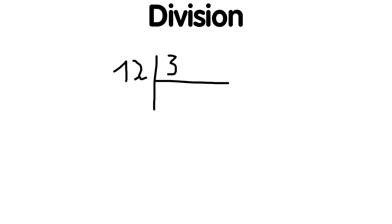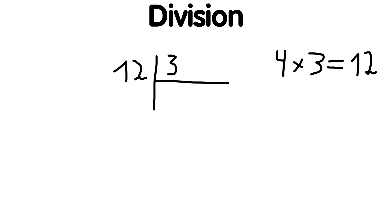Let's look at an example of dividing 12 by 3. We start with the dividend 12 and divide it by the divisor 3. If the result, in this case 4, is multiplied by the divisor, we get the original number 12. If the result is obtained with a remainder, the remainder is written after the number; if without a remainder, there is no remainder.